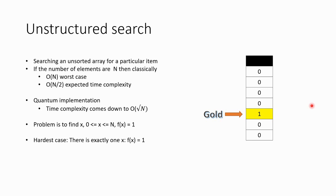The same problem can be reduced to a simpler version where every element in the array is 0 except one. The hardest case is when exactly one element is not 0, it is 1. So we are trying to find that 1 — f(x) should return 1. That is the problem we have in hand.